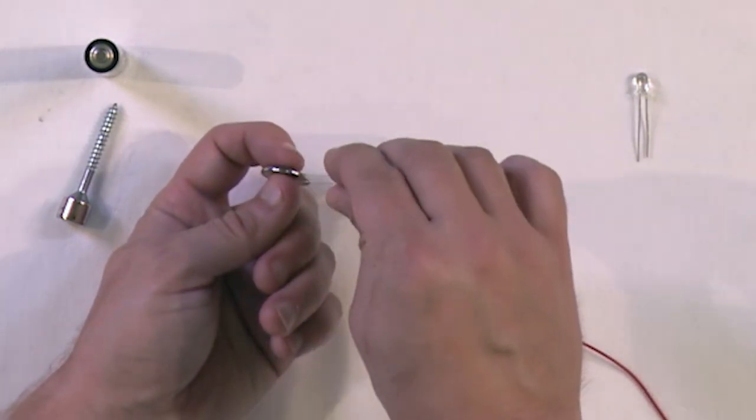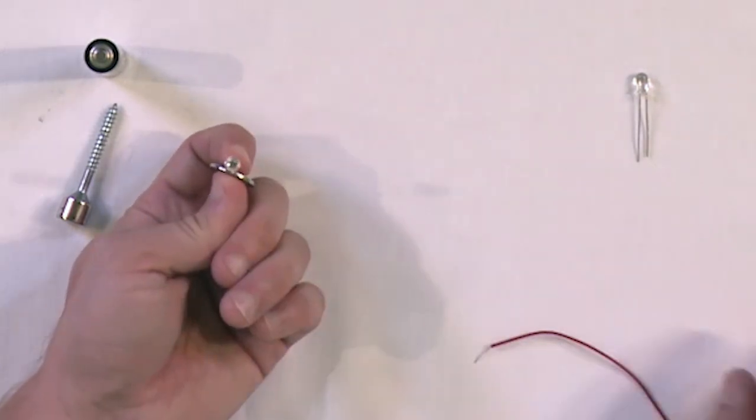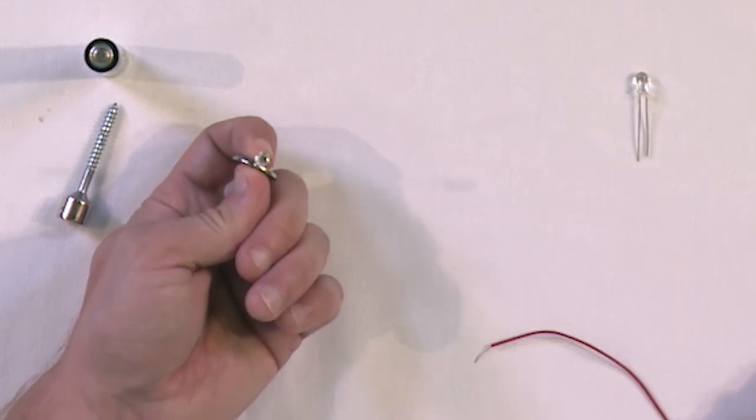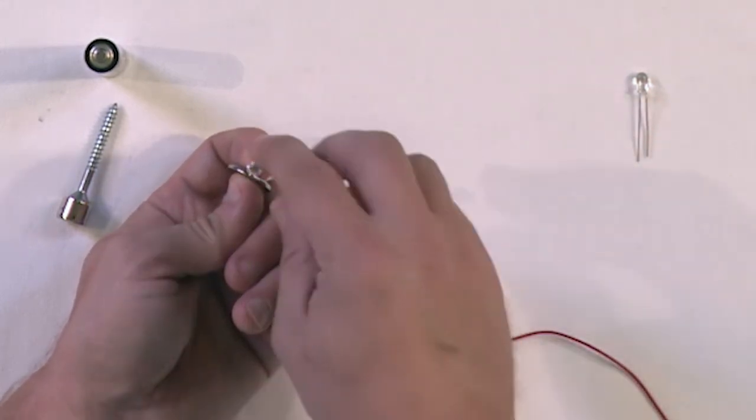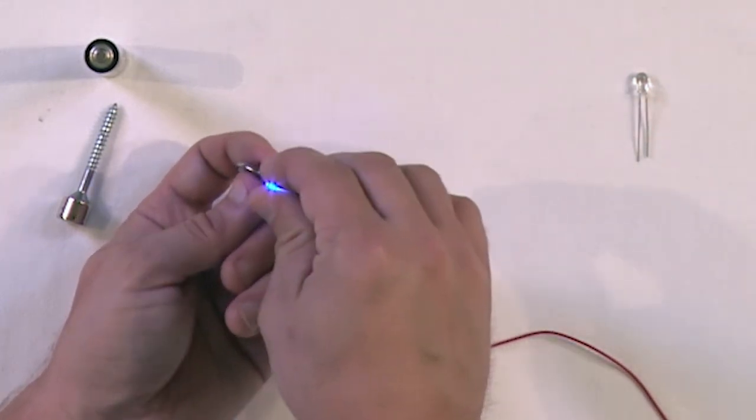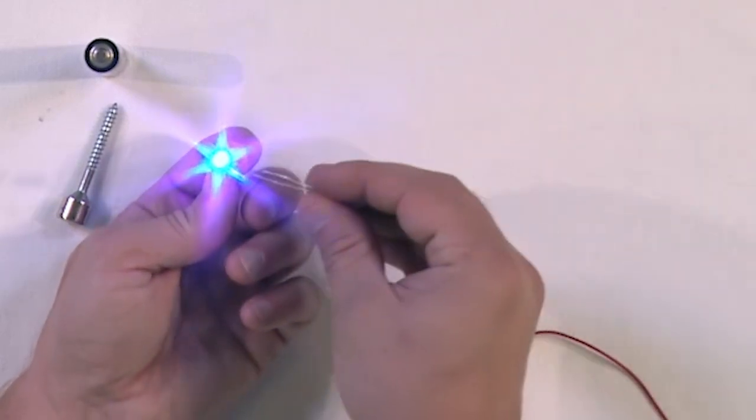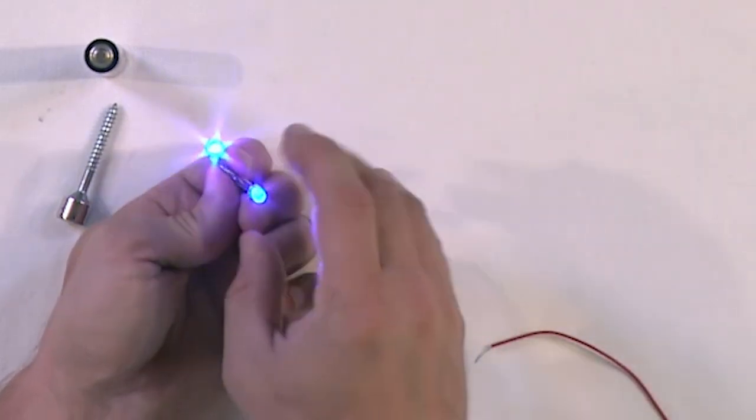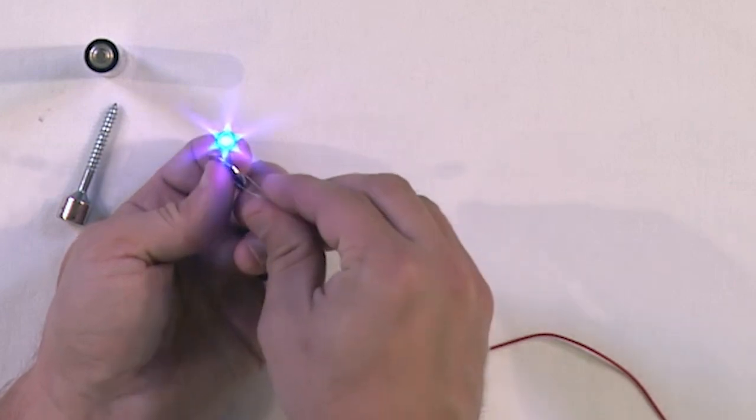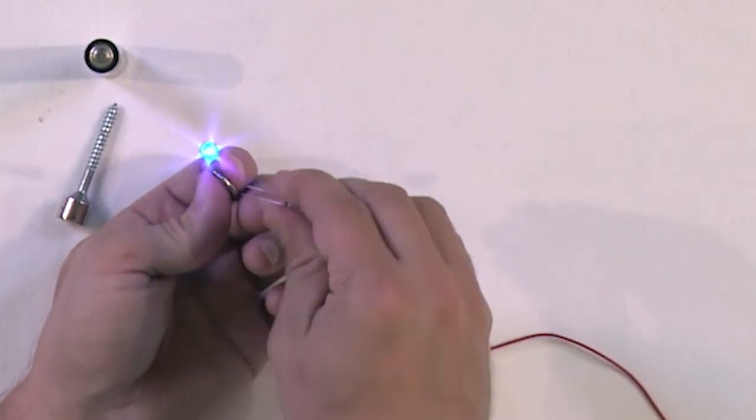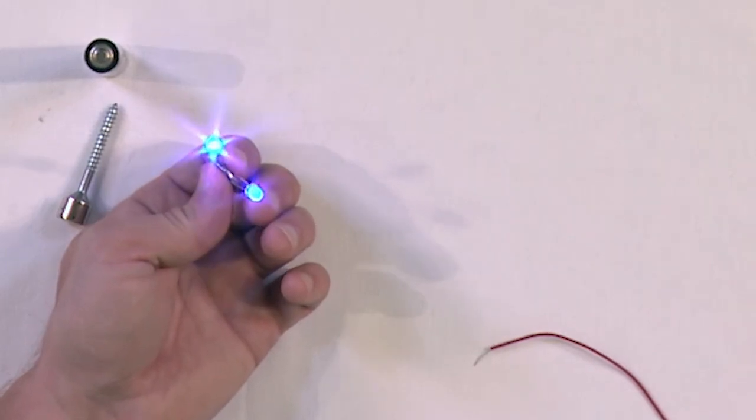Now if you accidentally hook the LED up backwards, nothing will happen. LEDs act as one-way valves for electricity. Just flip it over until you see the light coming out. And of course I've got another one here. So you see in this case, I've got two blue lights. If I accidentally hook that one up backwards, I've got nothing. That's just the way these little diodes work. So just hook it up until you see the two lights.